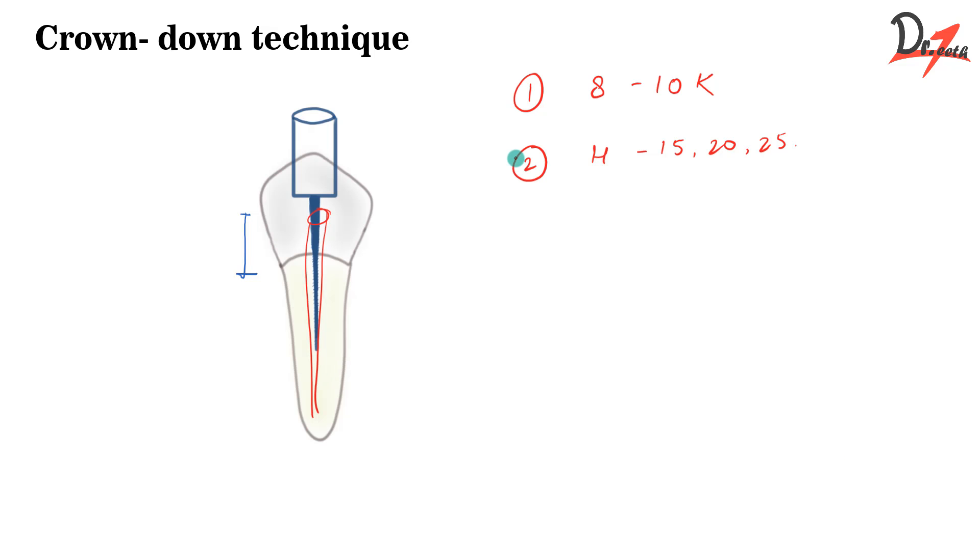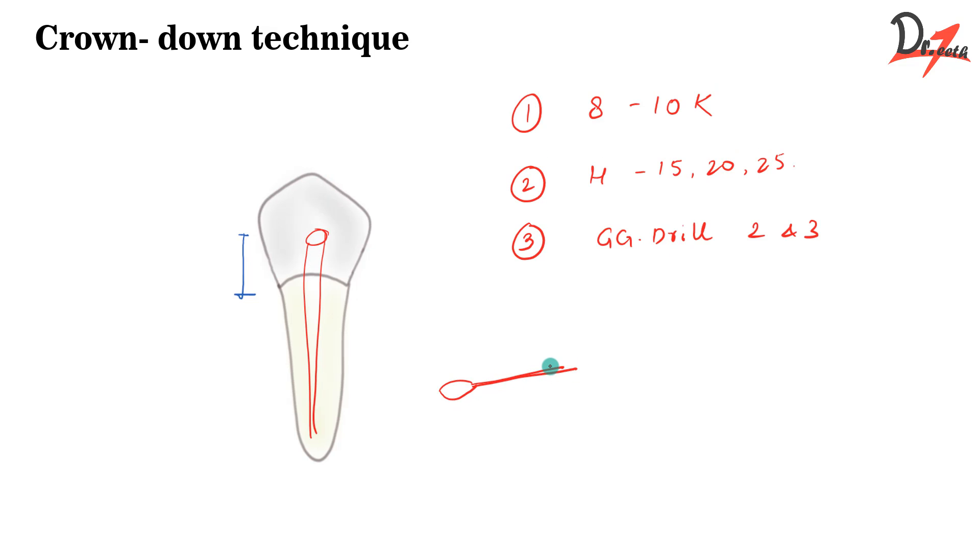Now once we do it, we will switch to the Gates Glidden Drill number 2 and 3. So first of all, we will use the larger Gates Glidden Drill first and then subsequently smaller diameter Gates Glidden Drills have to be used. The Gates Glidden Drill looks somewhat like this. I'll insert a picture somewhere. Now keep in mind that all these different types of sizes of drills should not be taken to the same position. So the larger diameter drill will be, let's suppose here, then the smaller one will be here and still smaller one will reach up till here, so that we maintain that proper shape of the canal.